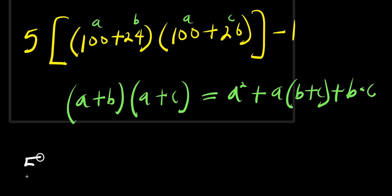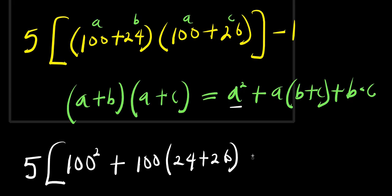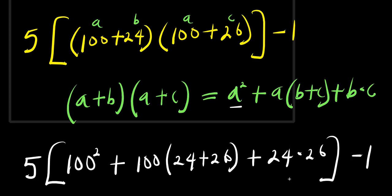So from here I have 5 times — applying the identity with a equals 100, b equals 24, c equals 26 — then minus 1, minus 1.